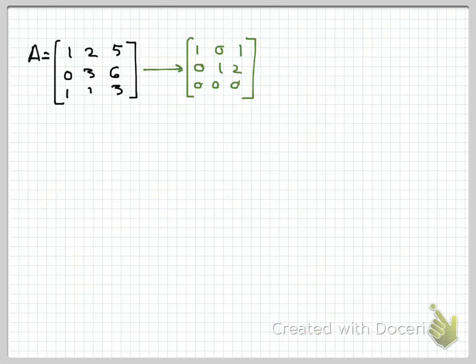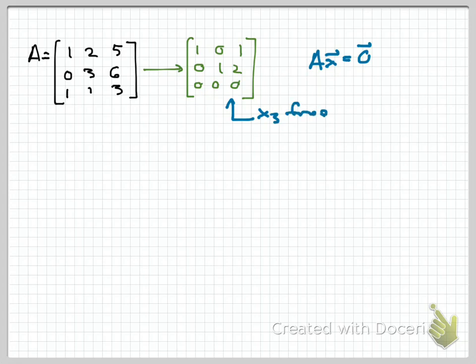Now let's think about a basis for the null space of A. The null space of a matrix is the set of all solutions to the homogeneous equation Ax equals 0. To find a basis for the null space, I'm going to solve this equation and get the general solution in parametric form. I've already got the reduced row echelon form of A, so this is a fairly quick step. X3 is a free variable; X1 equals negative X3, and X2 equals negative 2X3.